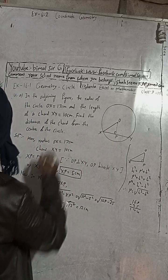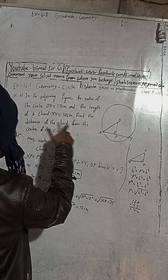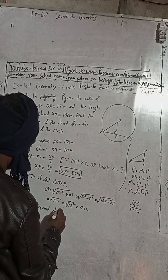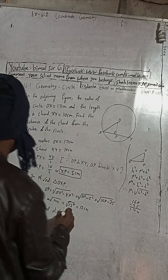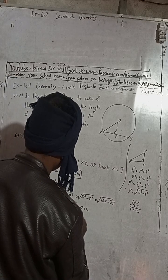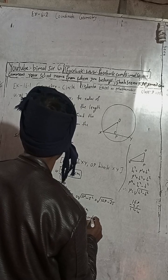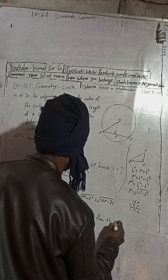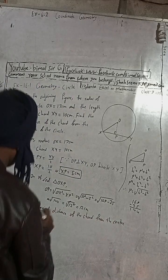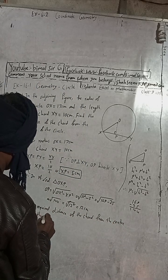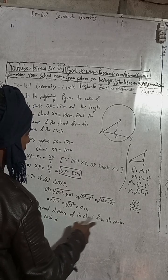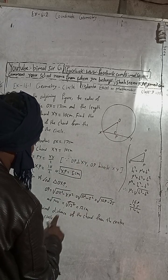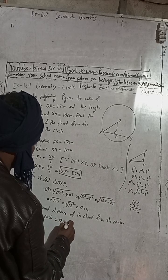We got OP equal to 12 cm. Therefore, the required distance of the chord from the center of the circle is OP, which is equal to 12 cm.